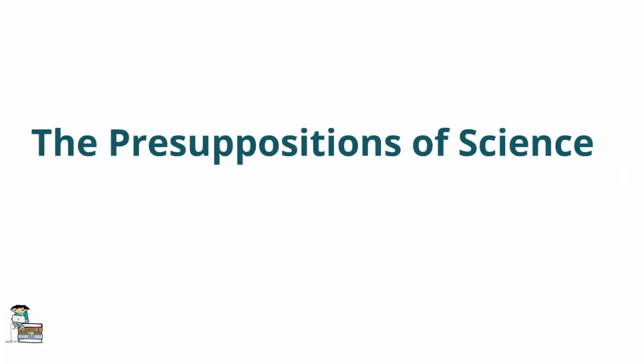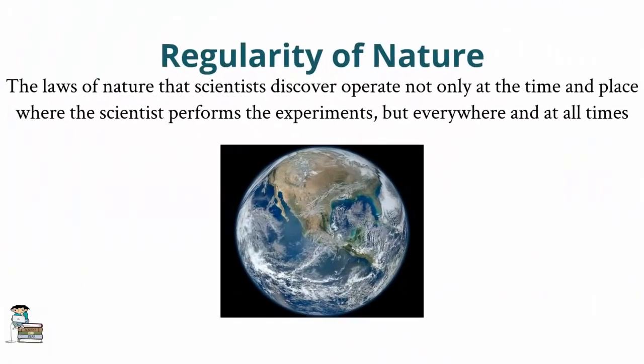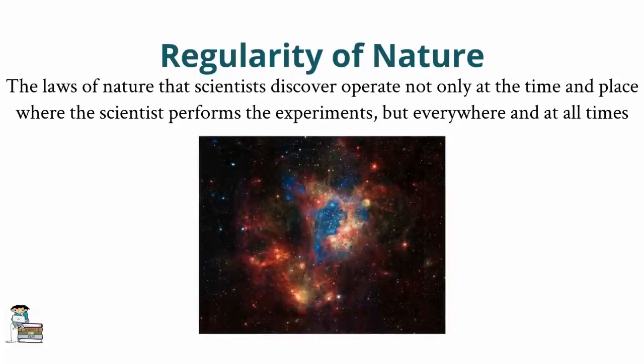These propositions, which can be called the presuppositions of science, include such things as a belief in the validity of sense experience, and a belief in what is called the uniformity, or regularity, of nature. Assenting to the regularity of nature means that one believes that the laws of nature that scientists discover operate not only at the time and place where the scientist performs the experiments, but everywhere and at all times.